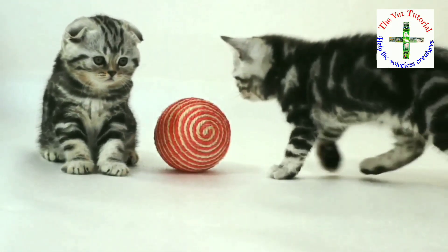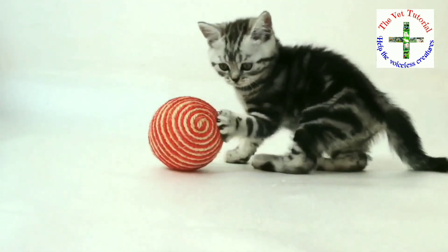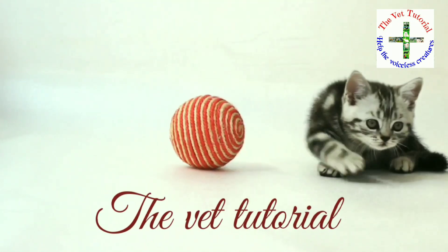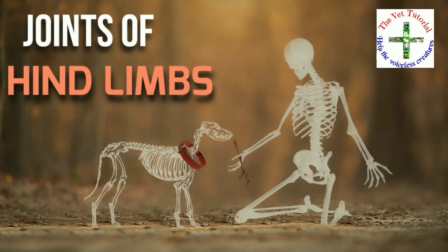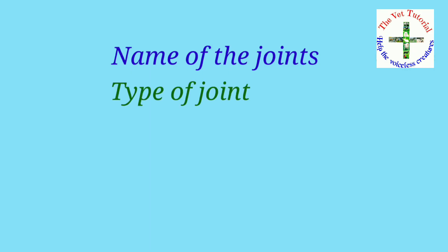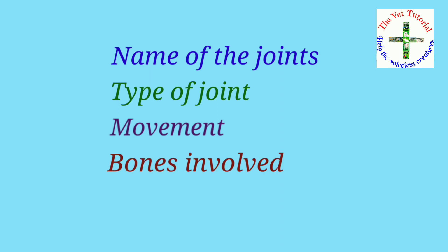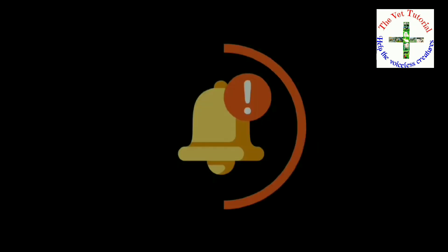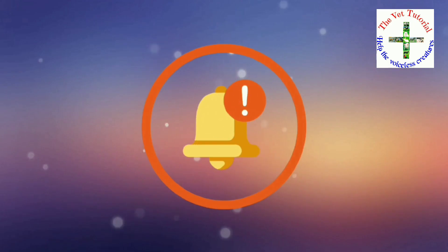Hello everyone, welcome to my channel, the Vet Tutorial. In this video we are going to study about the joints of the hind limb in tabular form, which includes the types of joints, the movement, bones involved in joint formation, and ligaments. Before starting, please subscribe to my channel, click the bell icon, and if you like this video give a thumbs up.